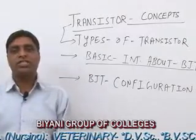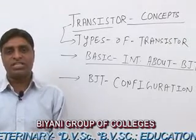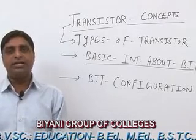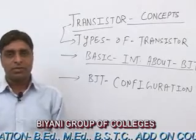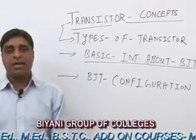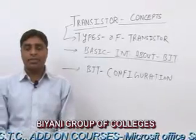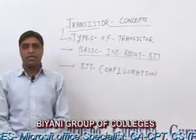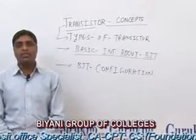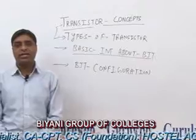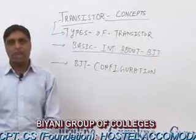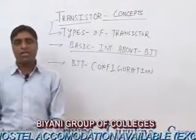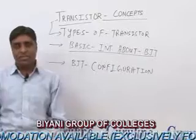BJT has three parts. The first is the Emitter, which is the basic component that provides the majority charge carriers in the transistor. The second is the Base, which is the opposite type of semiconducting material — in the base we provide opposite type of charge carriers which are collected by the Collector. The Collector is the biggest part of the transistor and it collects all the majority charge carriers provided by the emitter.